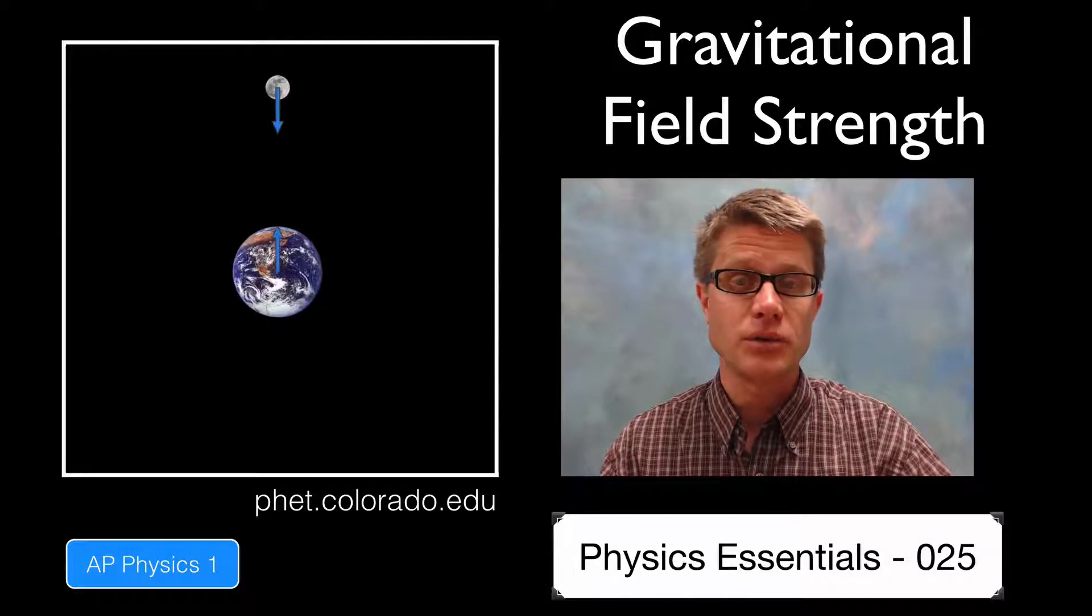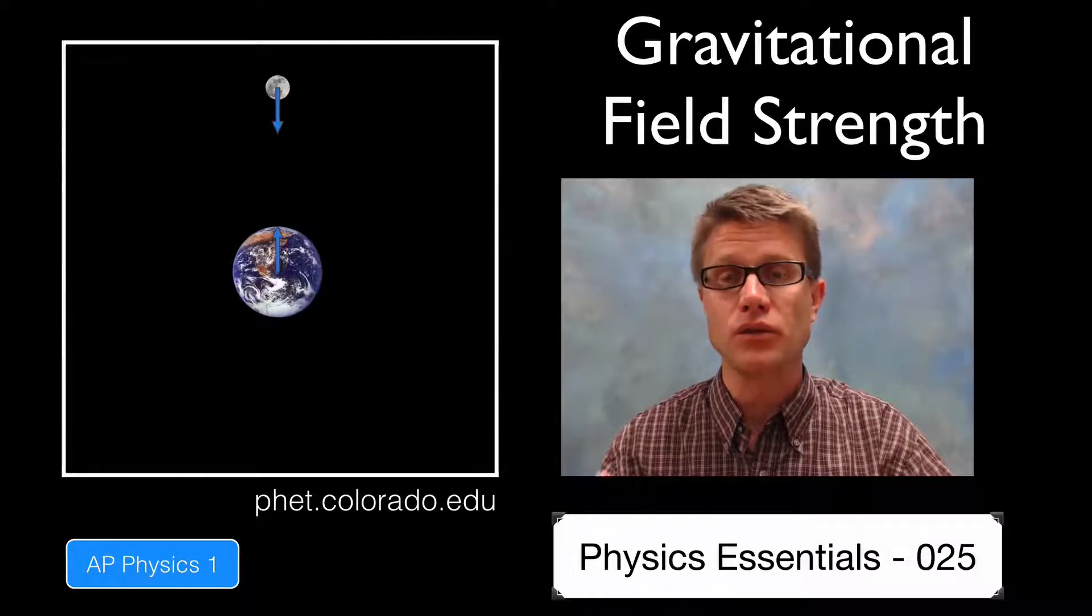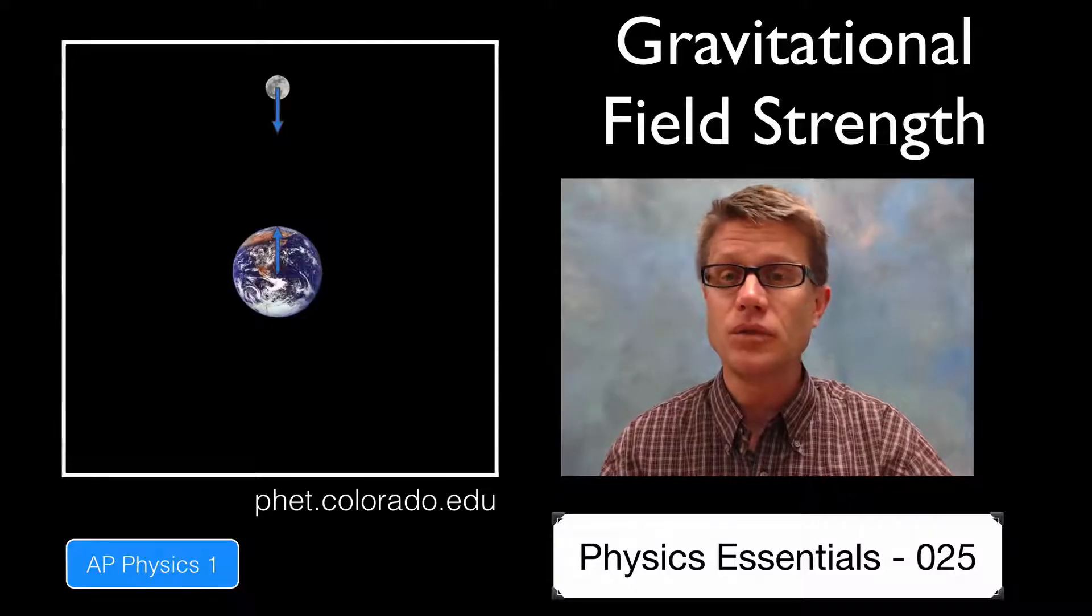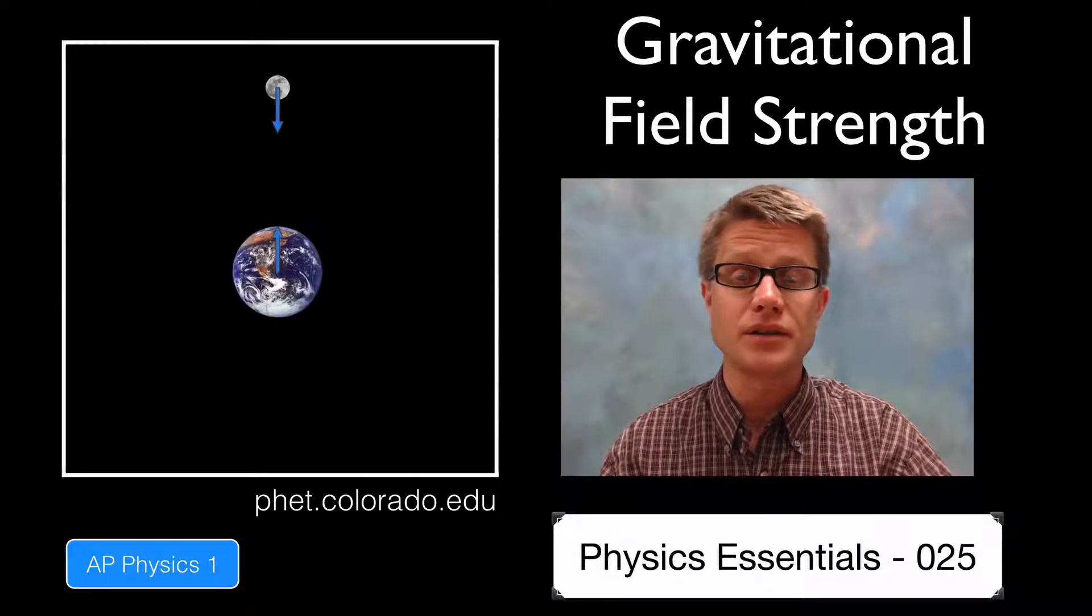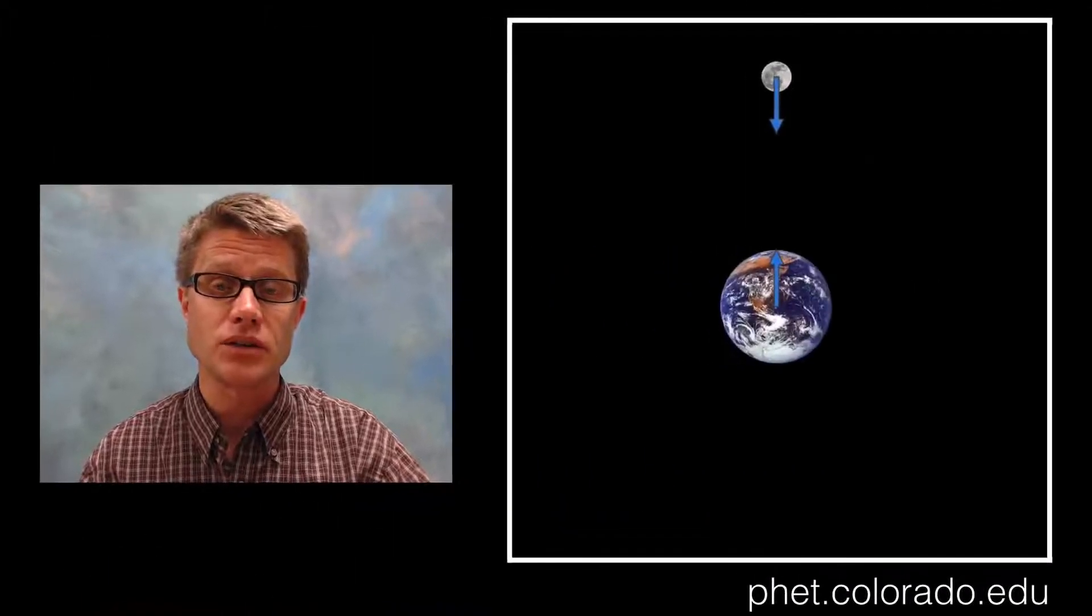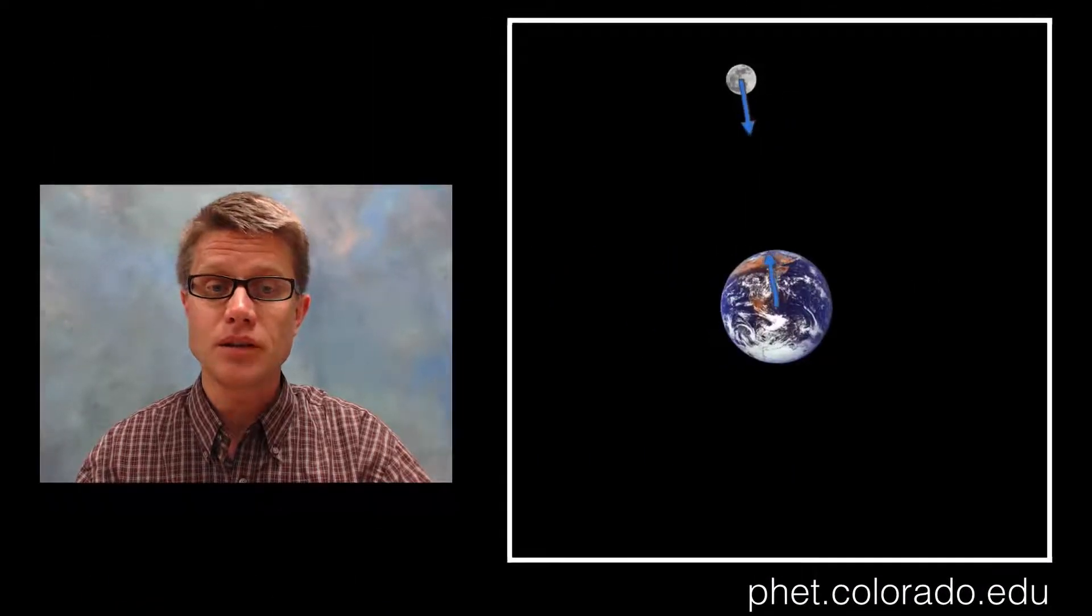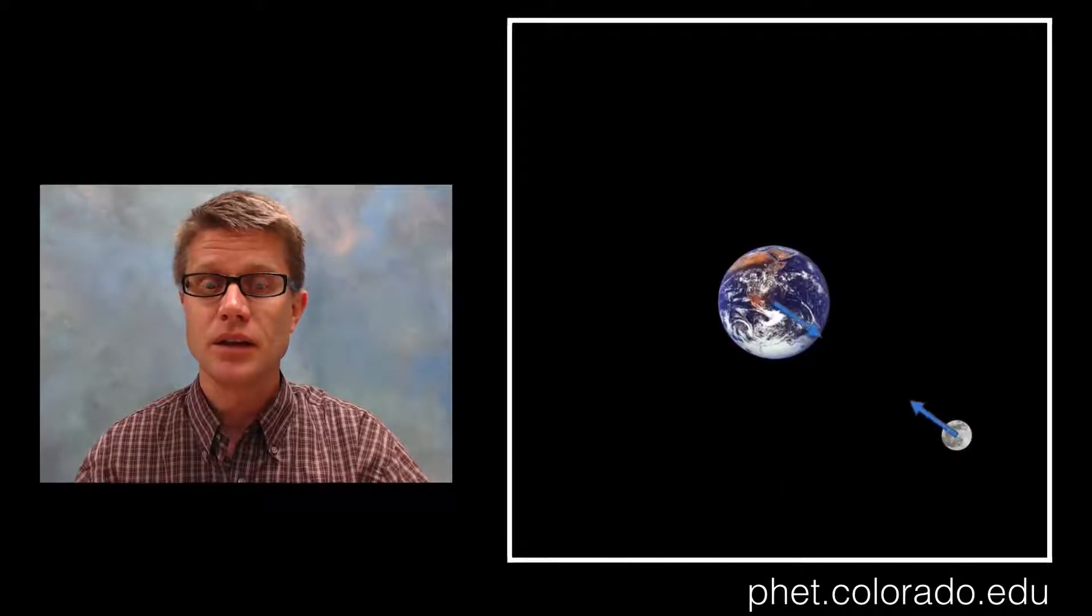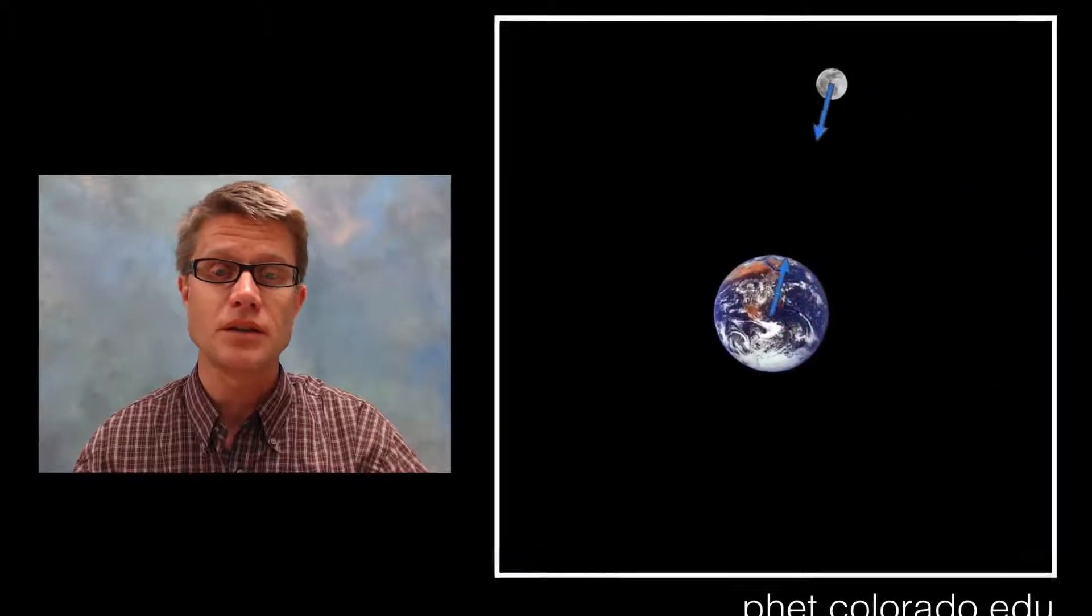It's on gravitational field strength, which is a measure of the gravitational force placed on an object that's in a gravitational field. The moon orbits around the earth and stays there because of this gravitational field. If we place it in orbit, watch how the force on those two objects remains constant. The gravitational field strength is the same.